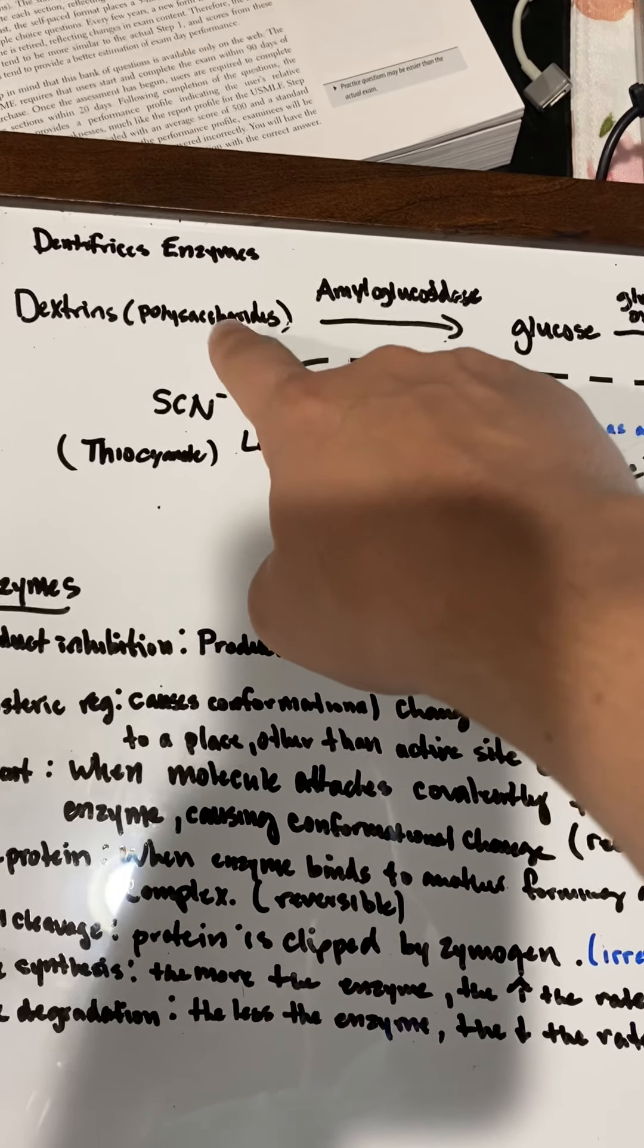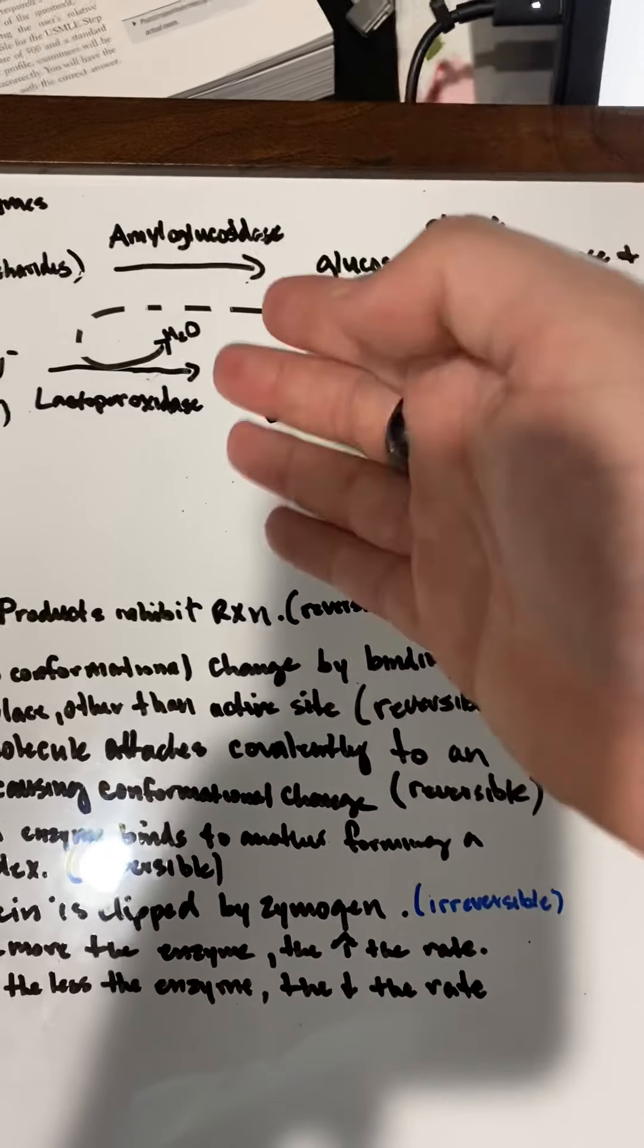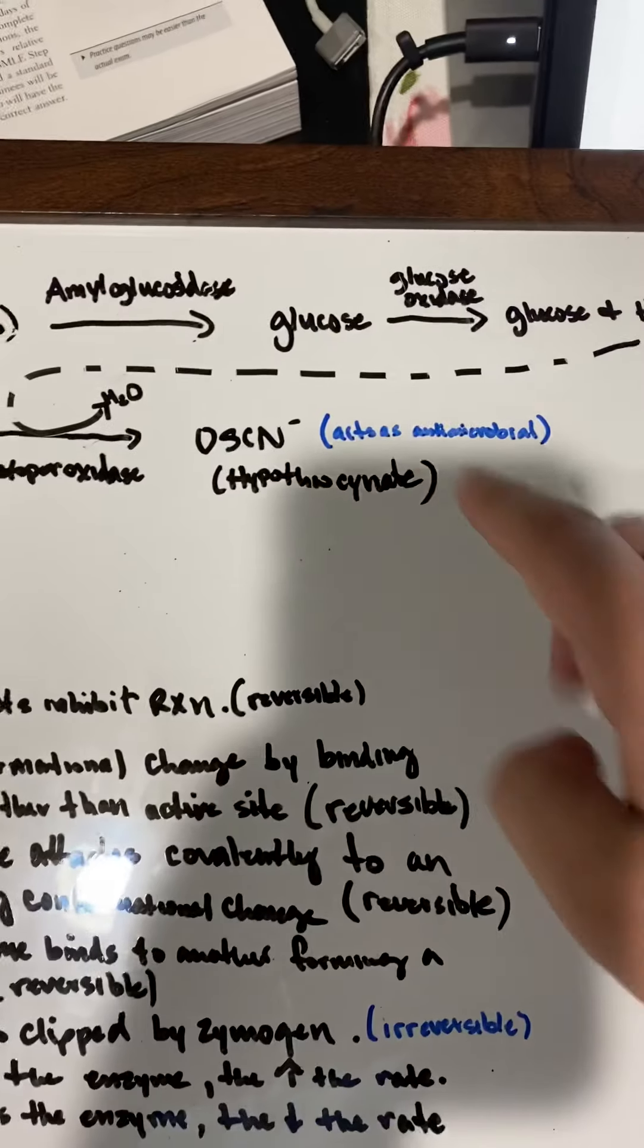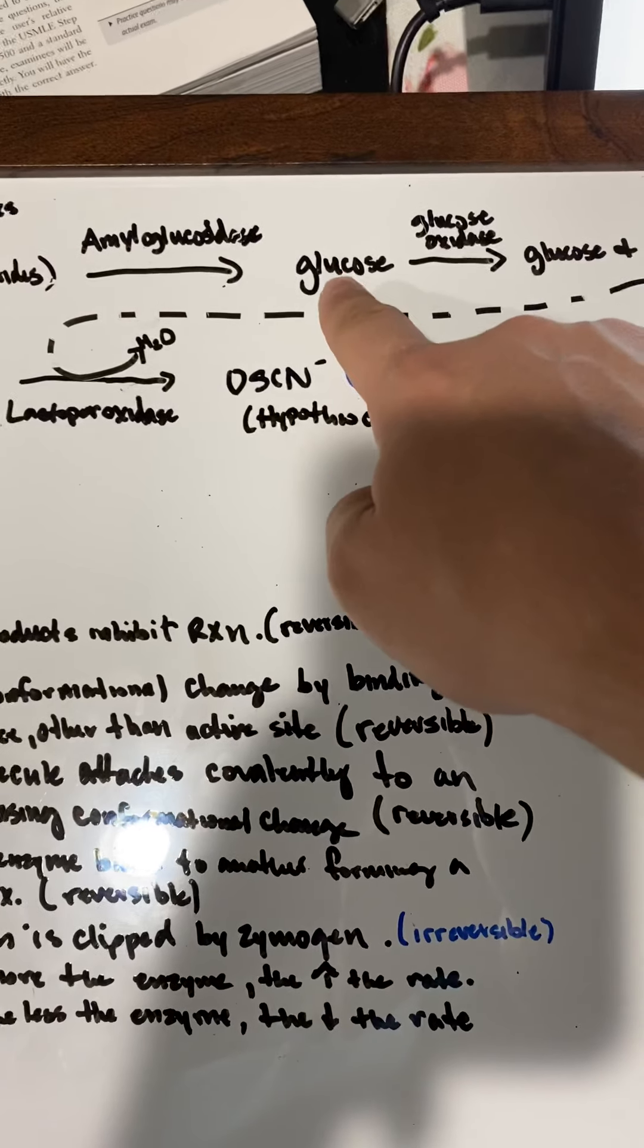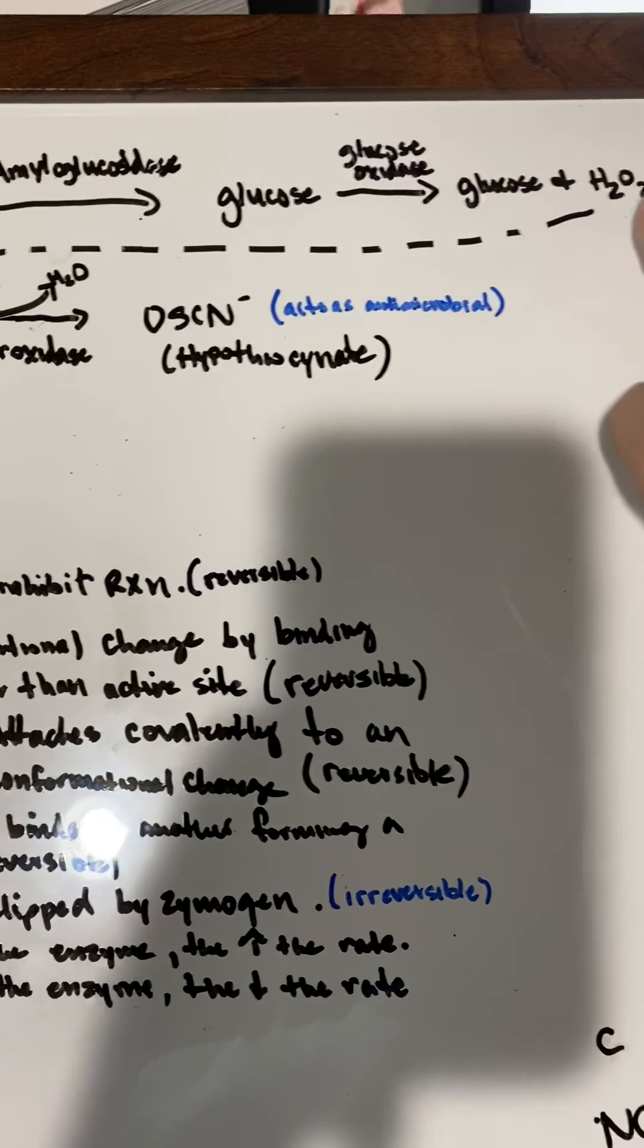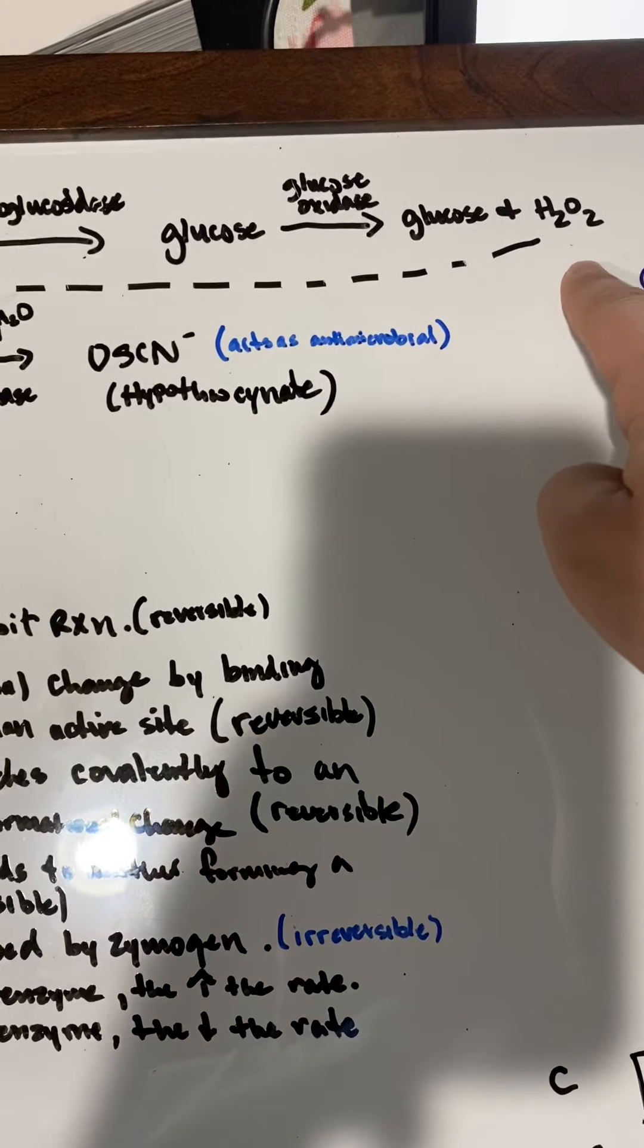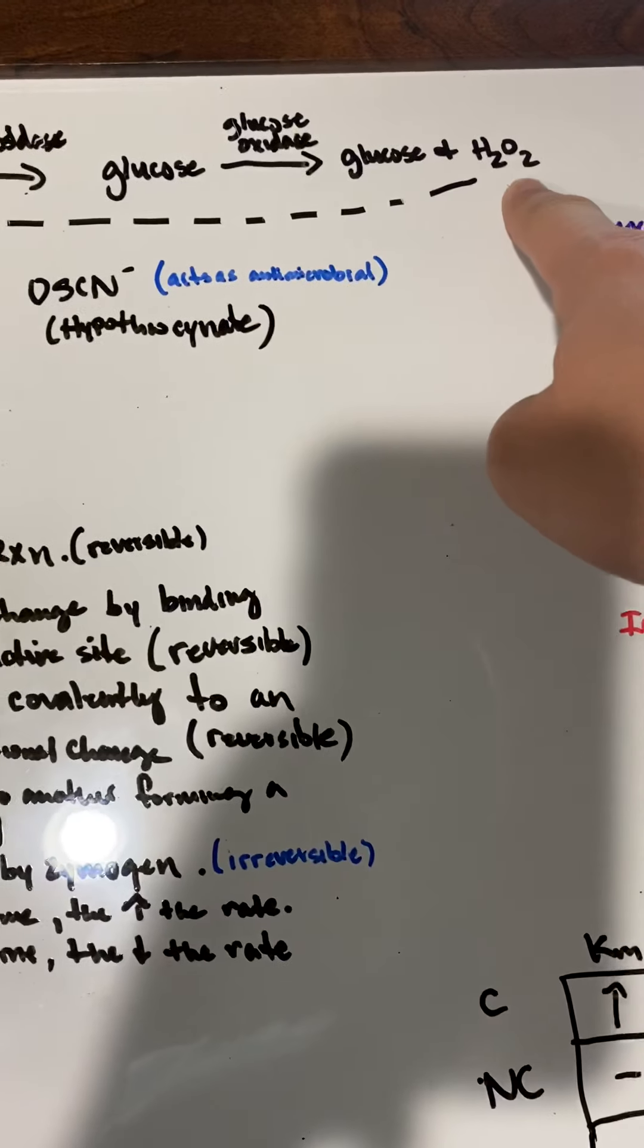It turns polysaccharides found in your mouth and saliva and breaks it up into glucose. Then from glucose we have glucose oxidase, which keeps the glucose but makes a peroxy acid.